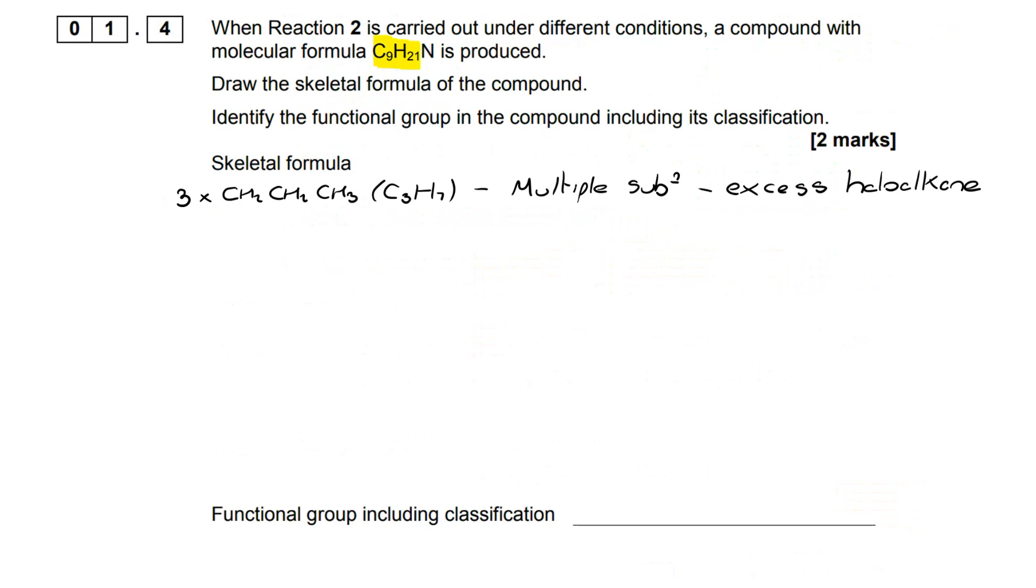There was a question earlier about what the condition would be to give us that particular amine. If we reversed that and had an excess of the haloalkane, we could end up with multiple substitutions and we can find that this will react further. You'll know that we can have primary, secondary, tertiary amines and also quaternary ammonium salts.